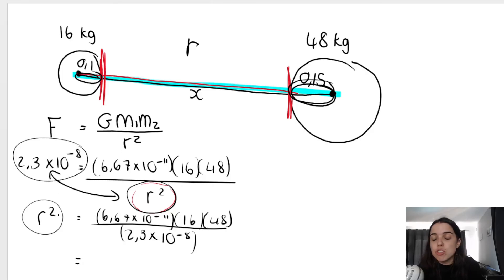This is R squared. Remember we're looking for R. So what's the opposite of square? Square root. So we square root both sides. So we square rooting this entire thing.